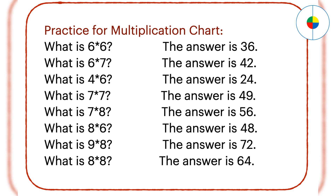What is 6 times 7? 6 times 7 is the same as 7 times 6. Split 6 to 5 plus 1, so 6 times 7 is (5 plus 1) times 7. Using the distributive property: 7 times 1 is 7, and 7 times 5 is 35. Add: 7 plus 35 equals 42. The answer is 42. What is 4 times 6? You can split 6 to 5 plus 1, or calculate 6 times 4: 6 plus 6 equals 12, and 12 plus 12 equals 24. The answer is 24.